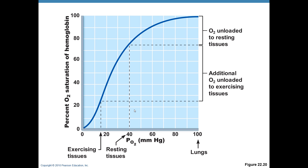A textbook diagram shows percent O2 saturation of hemoglobin in different states. At 100% saturation, all hemoglobin molecules have four O2 molecules attached. In the lungs, saturation is near 100% because that's where blood is oxygenated. Passing through capillaries around resting tissues, saturation drops to about 75% — about 25% of O2 is unloaded. In exercising tissues consuming a lot of O2, percent saturation can drop down to about 25%.